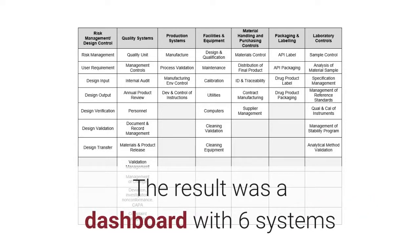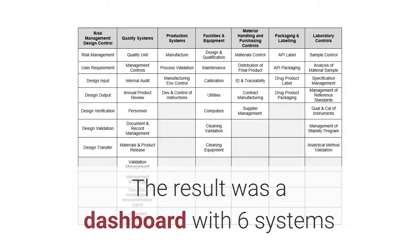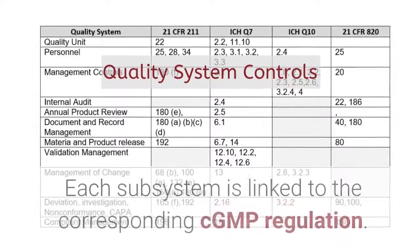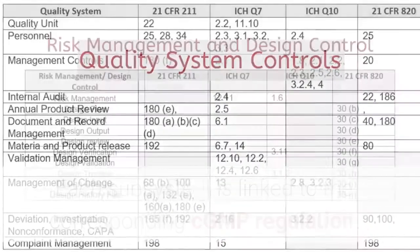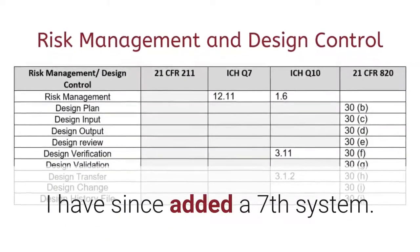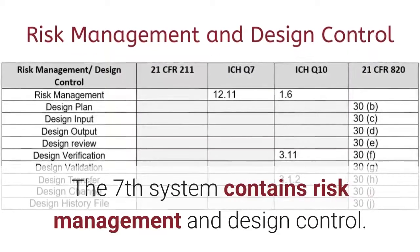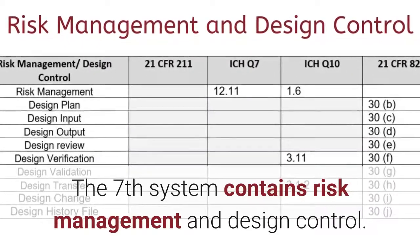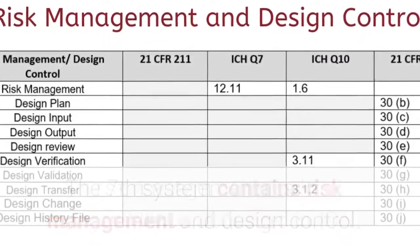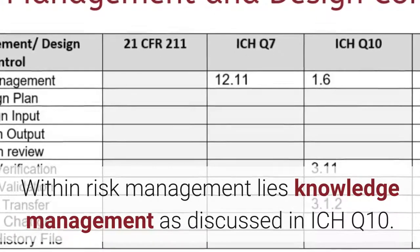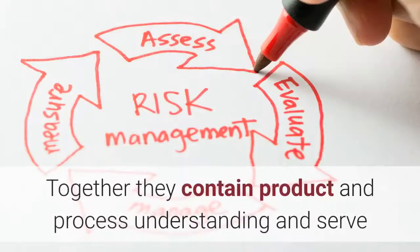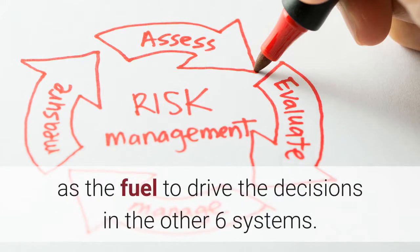The result was a dashboard with six systems, with each system having subsystems. Each subsystem is linked to the corresponding CGMP regulation. I have since added a seventh system. The seventh system contains risk management and design control. Within risk management lies knowledge management as discussed in ICH Q10. Together, they contain product and process understanding and serve as the fuel to drive the decisions in the other six systems.